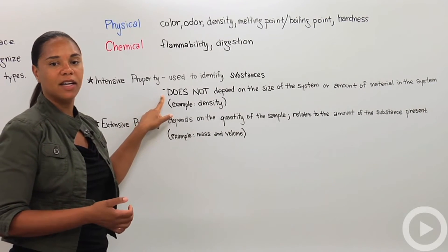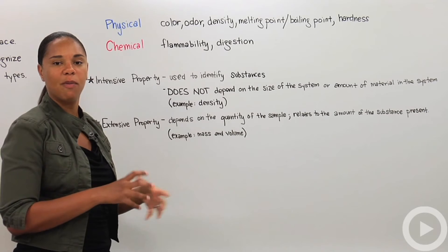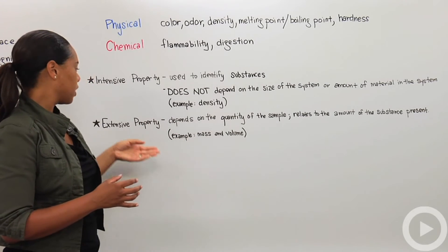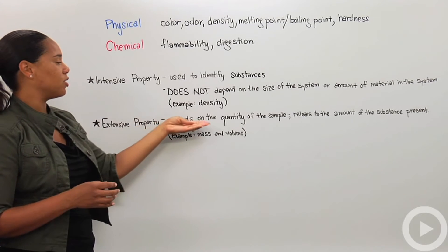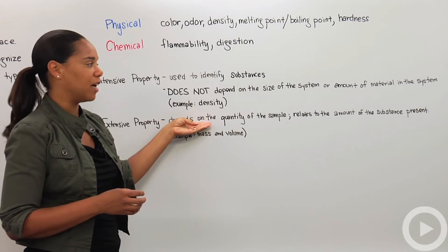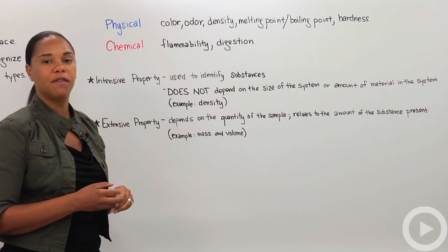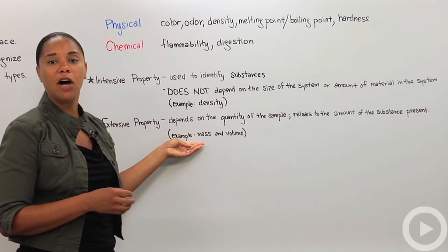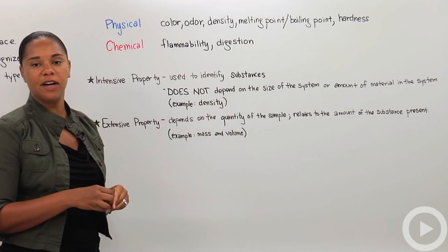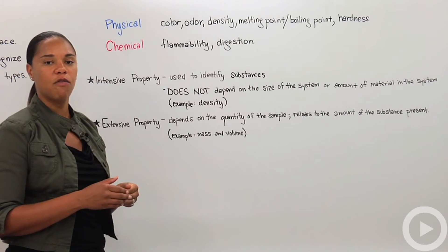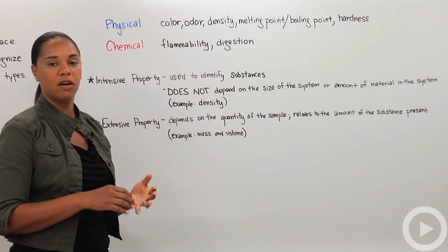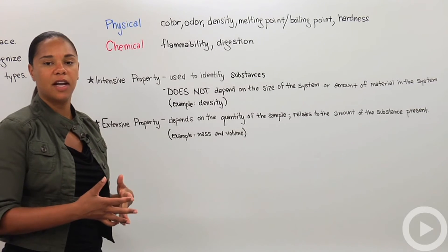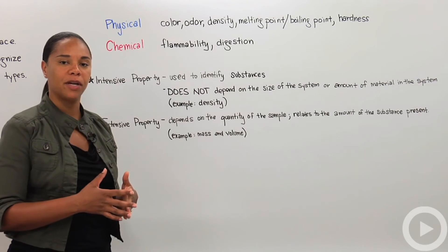An example of an intensive property is density — density is the same for a substance no matter how much or how little of it you have. An extensive property actually does depend on the quantity of the sample and relates to the amount of the substance present. Examples of extensive properties are mass and volume. I encourage you to find a couple of examples and test yourself distinguishing between physical and chemical properties, and intensive and extensive properties. And that's properties of matter.